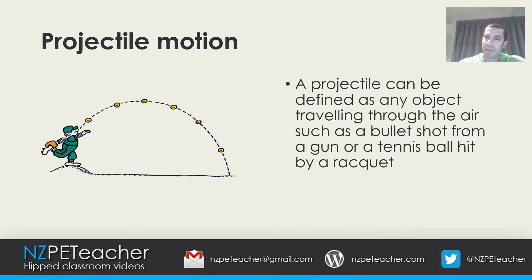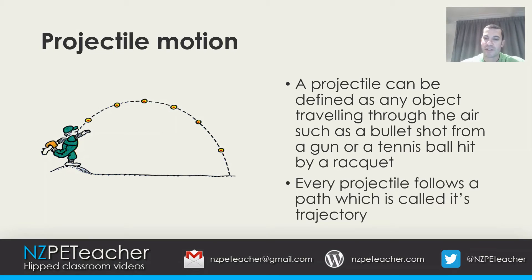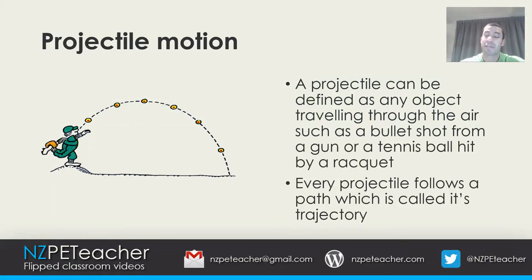A projectile can be defined as any object travelling through the air, such as a bullet shot from a gun or a tennis ball hit by a racket. Every projectile follows a path which is called its trajectory. When we think of projectiles in sport we usually think of objects that have been thrown or hit, such as balls or a javelin for example.